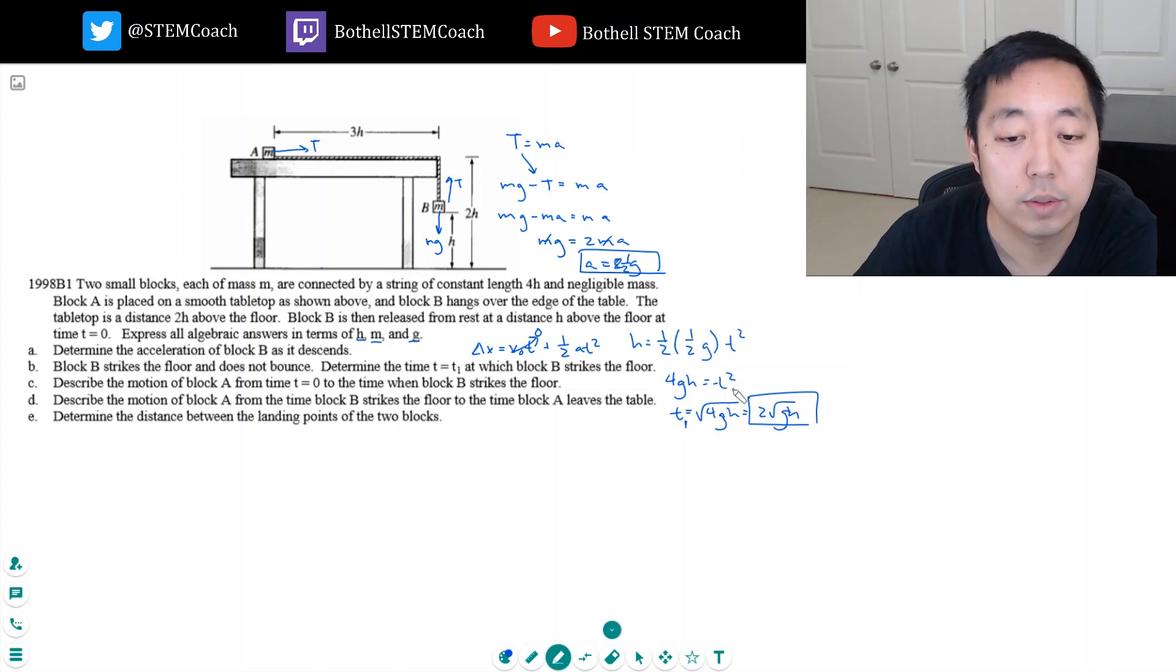Part C: describe the motion of block A from time T equals zero to the time when B strikes the floor. What's going to happen is he's going to accelerate. Once he hits the floor, there's no more force, but he's just going to continue on at a constant velocity. So: accelerates at A equals one half G until T1, then moves at a constant velocity.